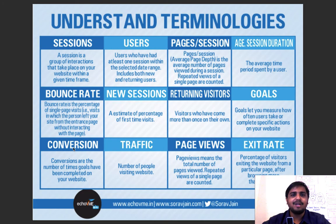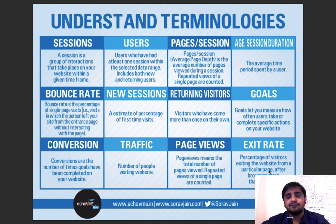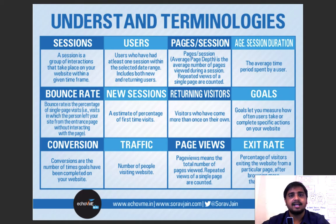Before you get started, you need to be aware of some terminologies in Google Analytics. Exit rate is the percentage of visitors exiting the website from a particular page after browsing more than one page — for example, they come to your website, go to the contact us page, and exit from there. That's where the exit rate is going to be high. Exit rate is basically when a particular page is the conclusion page for the visitors on your website.